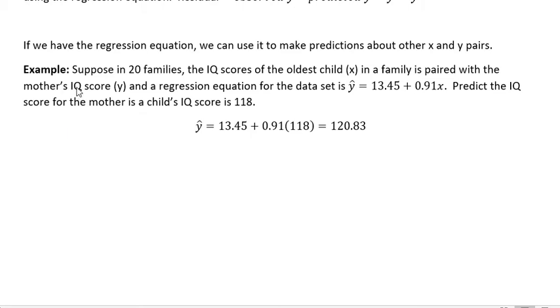For example, suppose in 20 families, the IQ scores of the oldest child, which we'll call x, in a family is paired with the mother's IQ score, which we'll call y. A regression equation for the data set is ŷ = 13.45 + 0.91x. Predict the IQ score for the mother if a child's IQ score is 118.